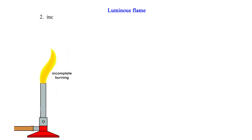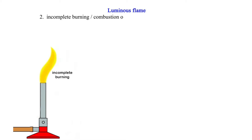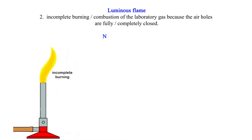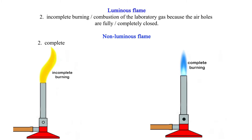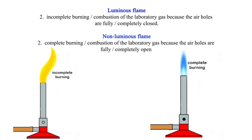Characteristic two: A luminous flame involves incomplete burning or combustion of the laboratory gas, because the air holes are fully or completely closed. A non-luminous flame involves complete burning or combustion of the laboratory gas, because the air holes are fully or completely open.